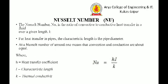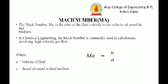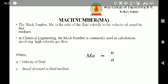The Nusselt number Nu is the ratio of convective to conductive heat transfer over a length L. A Nusselt number of around one means convection and conduction are about equal. The formula is Nu = h·L / k, where L is the characteristic length, k is thermal conductivity, and h is the heat transfer coefficient. The Mach number is Ma = u / a, where u is the velocity of the fluid and a is the speed of sound. The Mach number is a ratio of fluid velocity to the speed of sound and is commonly used in high-velocity gas flow calculations in engineering.